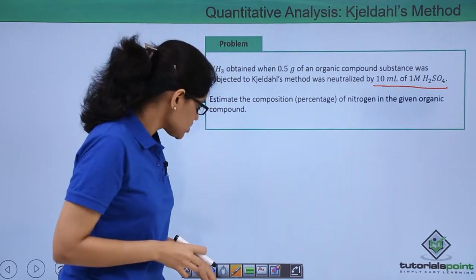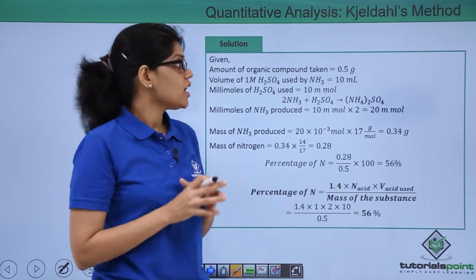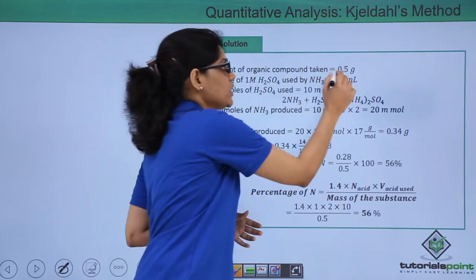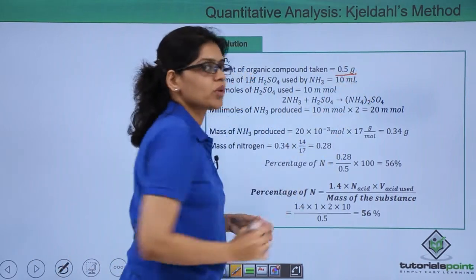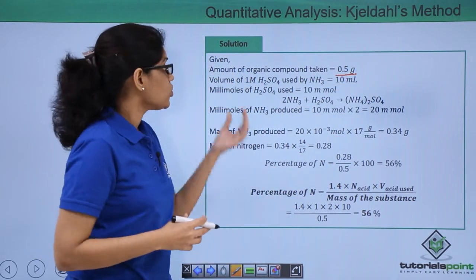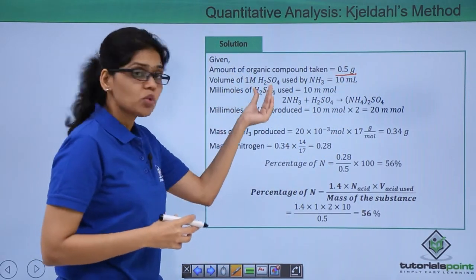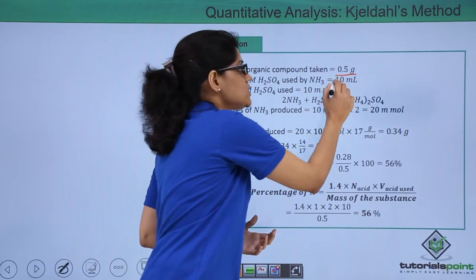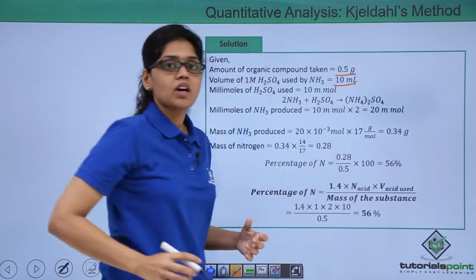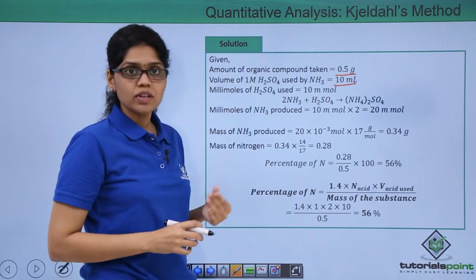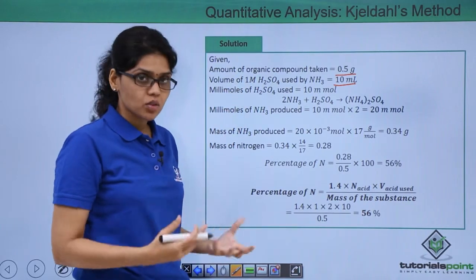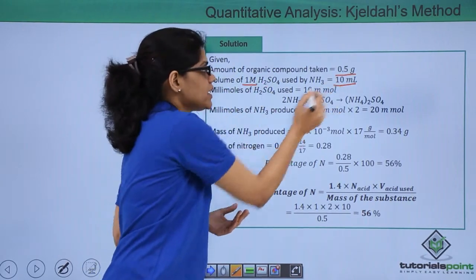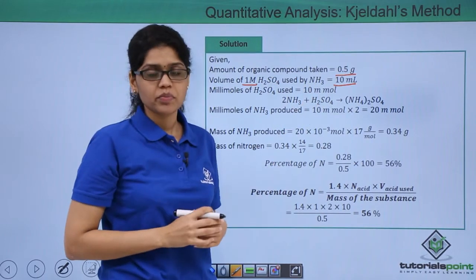Let's solve this question in detail. What is given to us is the amount of organic compound which is 0.5 gram, and the volume of 1 molar sulfuric acid used by ammonia is 10 ml. So the millimoles of sulfuric acid consumed is 1 molar into 10 ml, which is 10 millimoles.